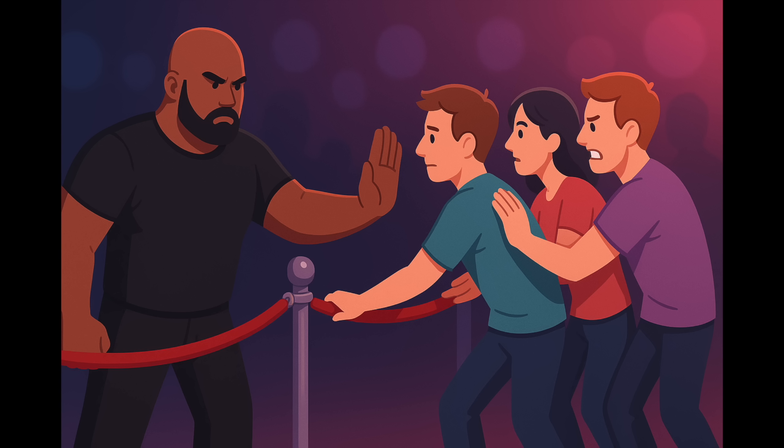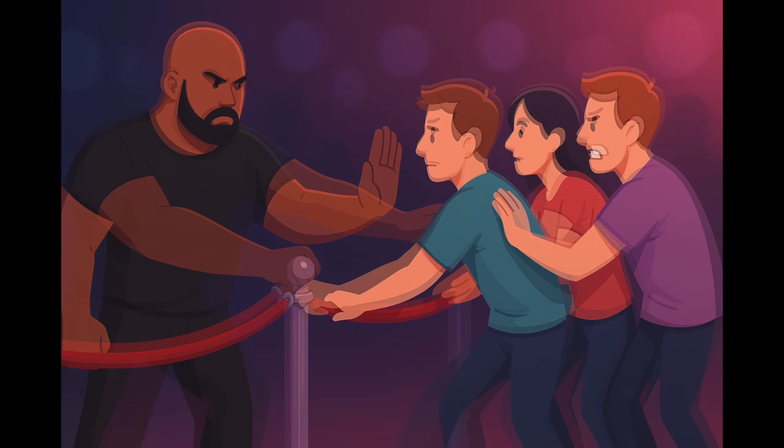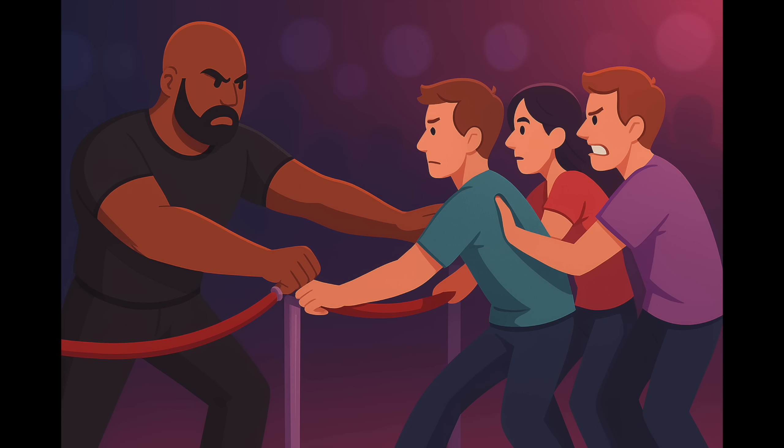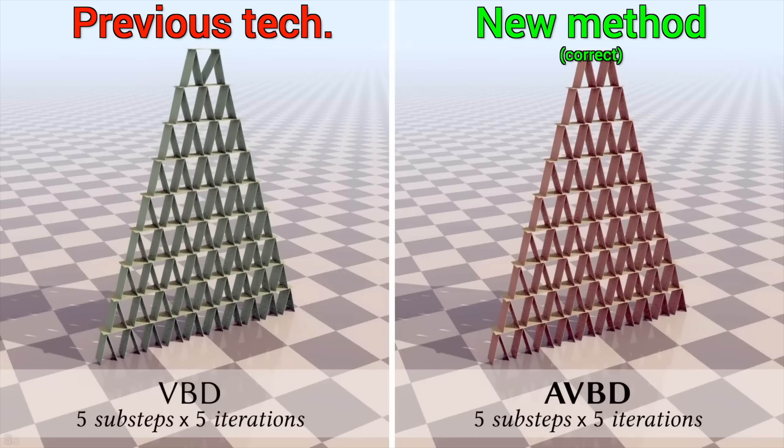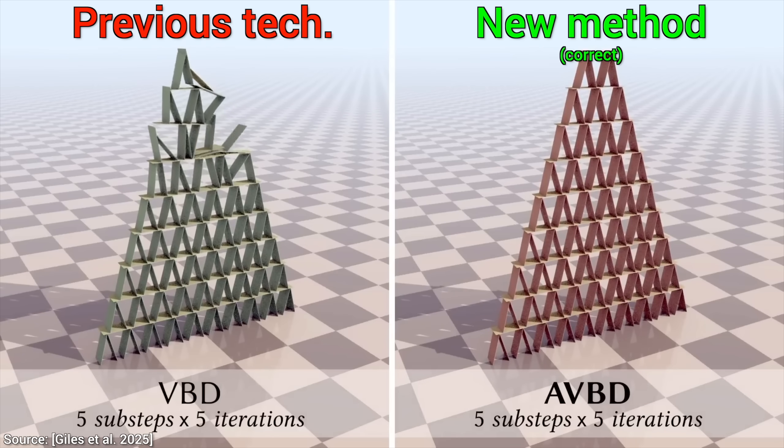A bouncer's job is to keep people behind the velvet rope. And if one person leans on the rope, the bouncer might just put a hand up. But if a group of people starts pushing, the bouncer plants their feet and pushes back harder. Their effort adapts to how much the rule is being broken. And that is what this technique does. Genius!